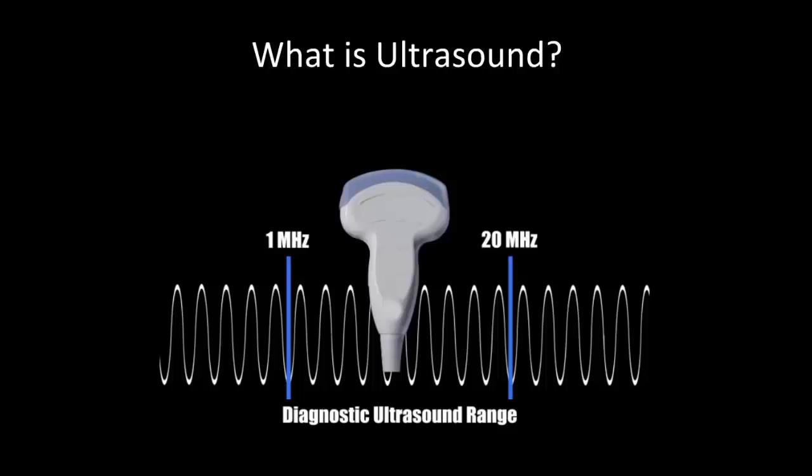Diagnostic medical ultrasound has a much higher frequency than that, usually in the range of 1 to 20 megahertz — so millions of cycles per second.